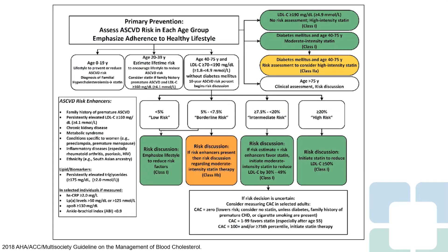Our latest guidelines for cholesterol management can be a bit overwhelming when you look at this algorithm of patients where we should consider statin therapy. We know that for patients between the ages of 40 and 75, an LDL cholesterol greater than 190 means we should consider statin therapy for primary prevention. Similarly, for patients above the age of 40 with a history of type 2 diabetes, it is also a class 1 recommendation to consider statin therapy for primary prevention.